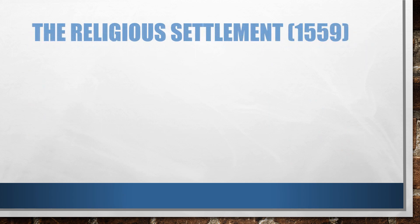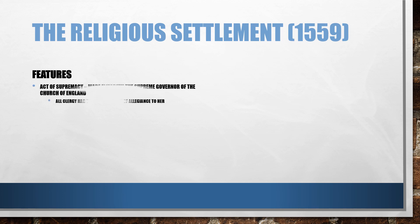The religious settlement was a compromise between elements of Protestantism and elements of Catholicism. The first act is the Act of Supremacy which made Elizabeth the supreme governor of the Church of England, removing the Pope as the head of the church but not putting Elizabeth as the head of the church.